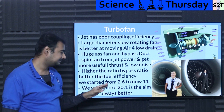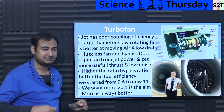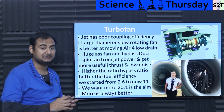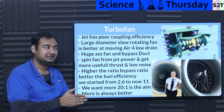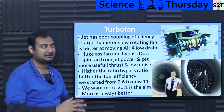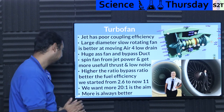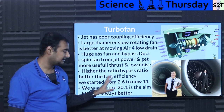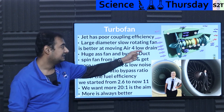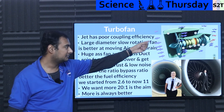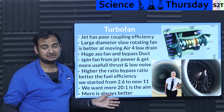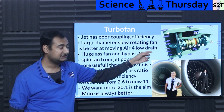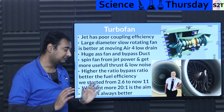The higher the bypass ratio, the better the fuel efficiency — how much propellant you have to burn to get from A to B goes down drastically because you are coupling the energy better. Back in the day we started as low as 2.6 to 1 — meaning if one part goes from the core, 2.6 goes from the ducts. Nowadays we have scaled up to 11 to 1, meaning if one goes through the core, 11 goes out through the duct. Very efficient.